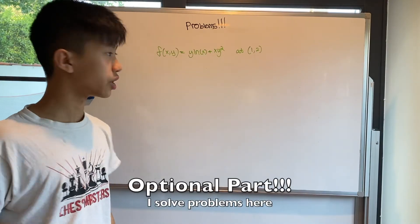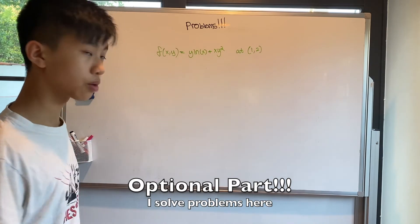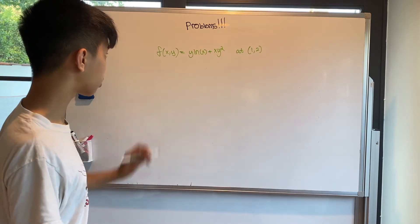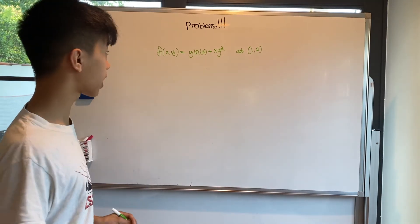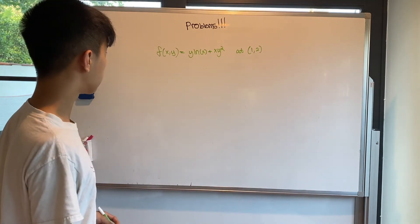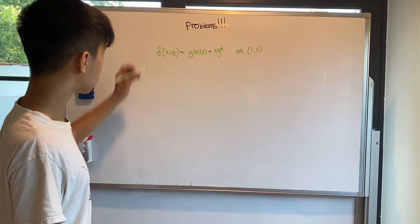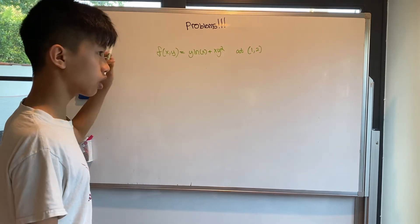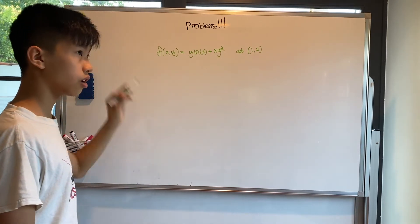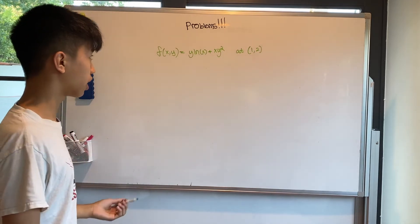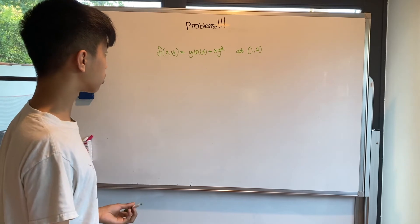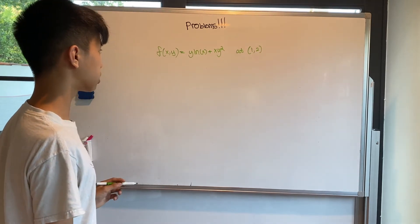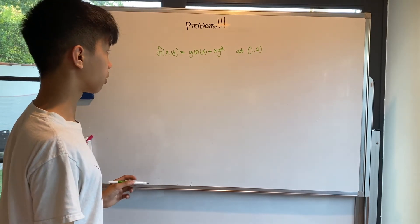Now that we know what a partial derivative and a gradient are, let's try to solve some practice problems. Suppose we have the function f(x, y) = y·ln(x) + xy².